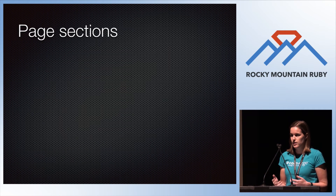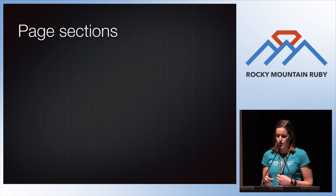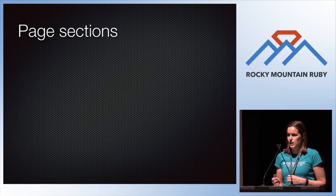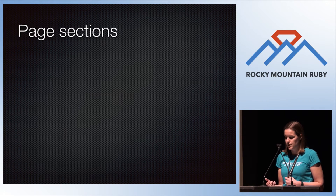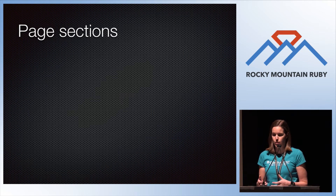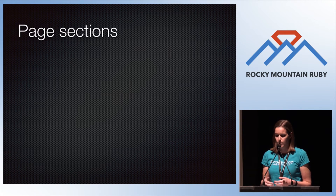I've been referring to these as page objects, but a lot of times you're going to want to make objects and classes for sections of pages instead of entire pages. Headers and footers are an example — those are shared across many different pages, so you'll want them in a separate class. Or even sections that aren't shared between pages: your page objects can get bloated with too many elements, and you'll want to separate them out into page sections.